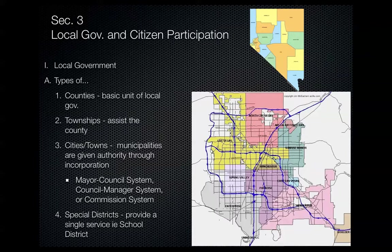In a council-manager system, the city council appoints a city manager to be the chief executive. The mayor's role is to lead the city council, while the city manager is in charge of all the different agencies. In a commission system, a group of elected commissioners lead city departments and set local policies. The city of Las Vegas uses the council-manager system, where the city council appoints a city manager as chief executive, and the mayor's role is essentially to promote the city and lead the city council.